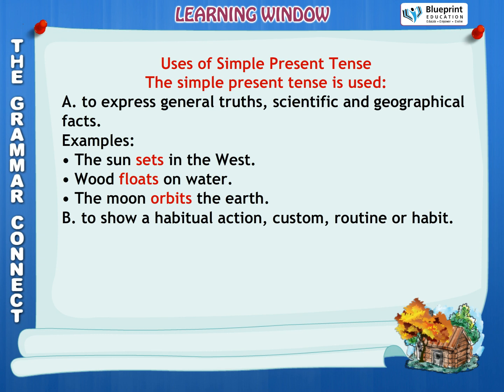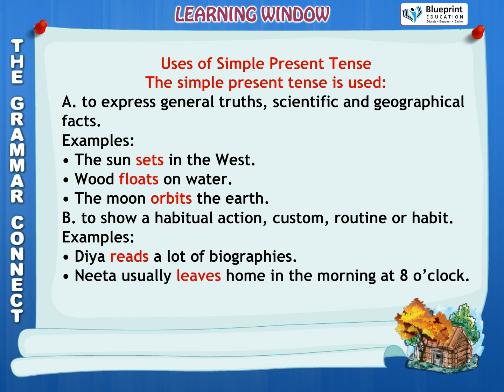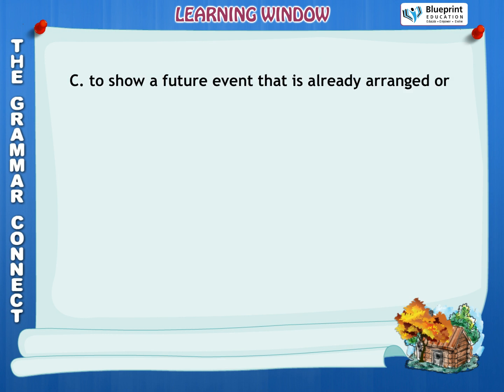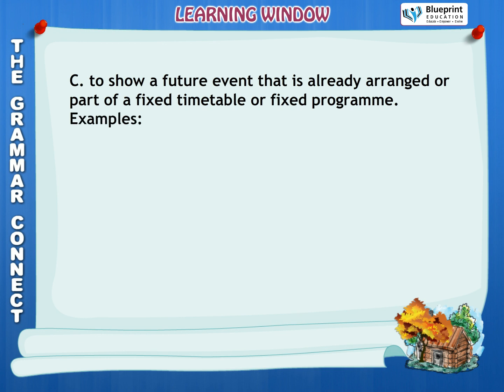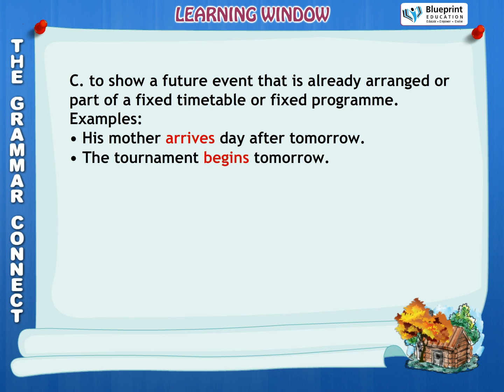B. To show a habitual action, custom, routine or habit. Examples: Diyar reads a lot of biographies. Neeta usually leaves home in the morning at 8 o'clock. I meet him at the metro station every day. C. To show a future event that is already arranged or part of a fixed timetable or fixed program. Examples: His mother arrives day after tomorrow. The tournament begins tomorrow. They move into their new house next month.